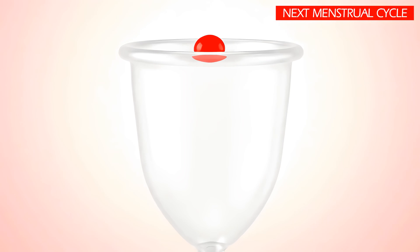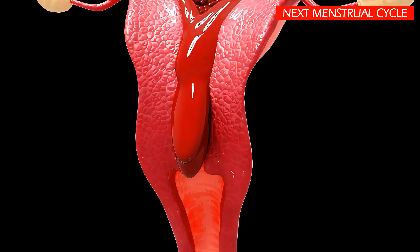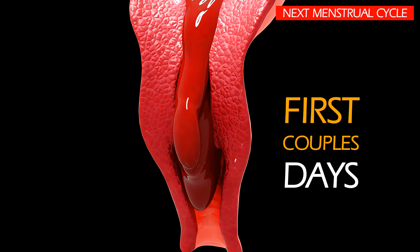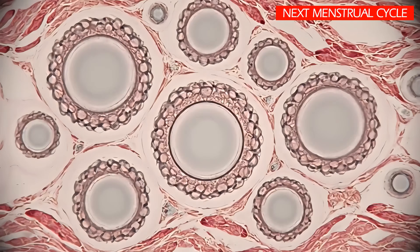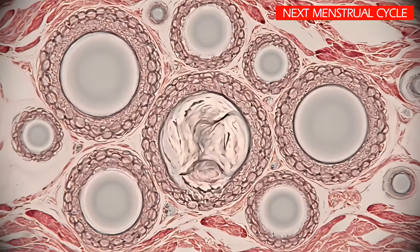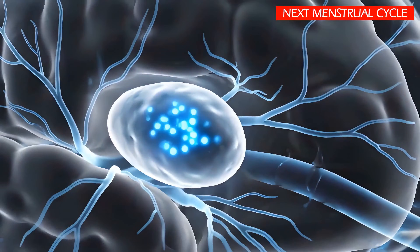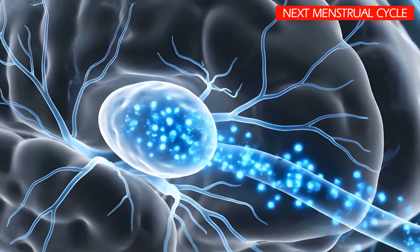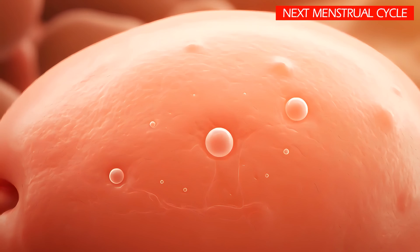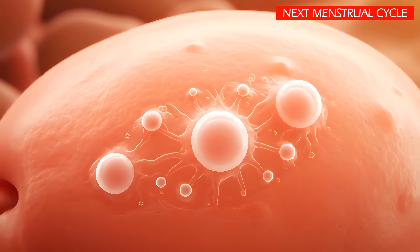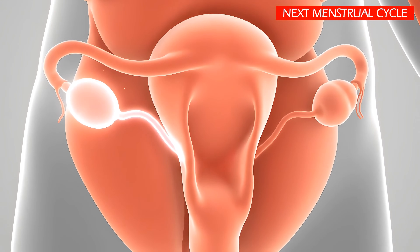The volume of menstrual fluid loss typically ranges from 20 to 90 milliliters over the entire period. The flow is usually heaviest in the first couple of days and then gradually tapers off. The first day of the menstrual cycle is considered the first day of the follicular phase of the ovarian cycle. While the uterus is shedding its lining, the pituitary gland begins to release FSH, which prompts the ovaries to start maturing a new set of follicles, one of which will eventually release an egg in the next ovulation. And then both ovarian and menstrual cycles start over again every month.